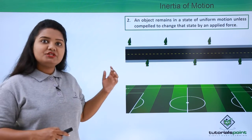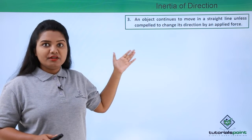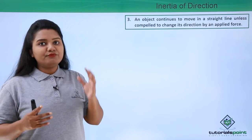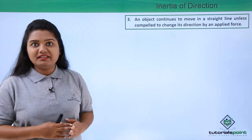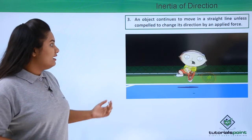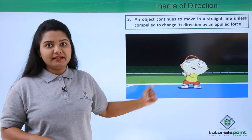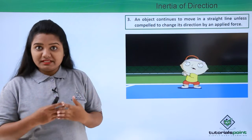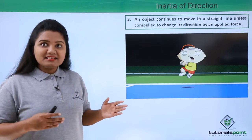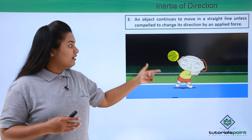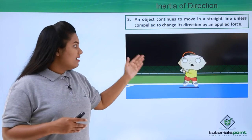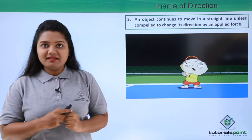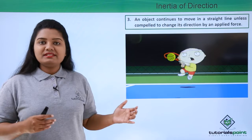The inertia of direction is the tendency of a body to continue moving in a particular direction unless an externally applied force acts on it and compels it to change direction. For example, a tennis ball moving toward a player — the player hits the ball with a tennis racket, and this force changes the direction of the tennis ball. This is a good example of the inertia of direction, where the body changes its direction only when a force acts on it.